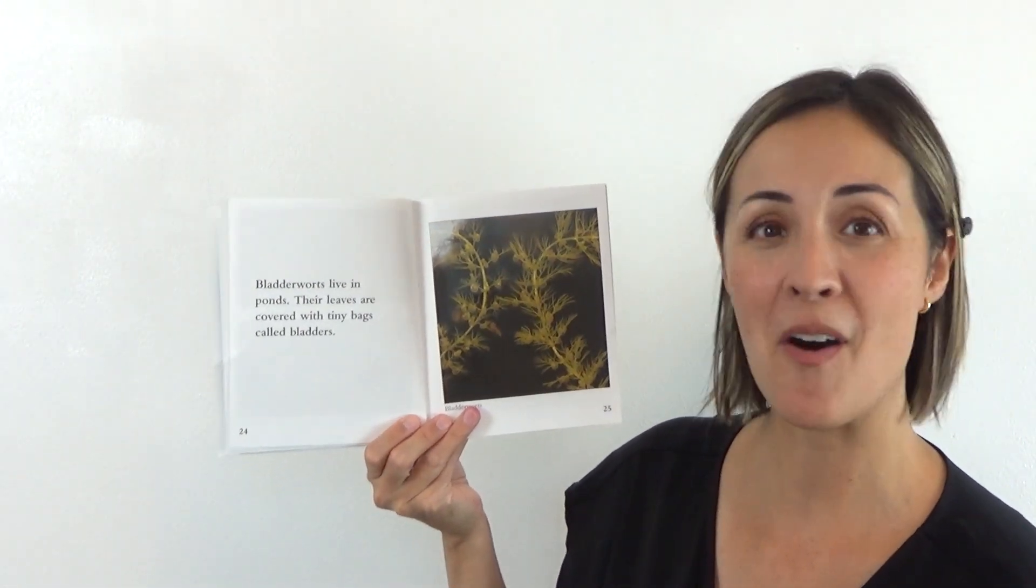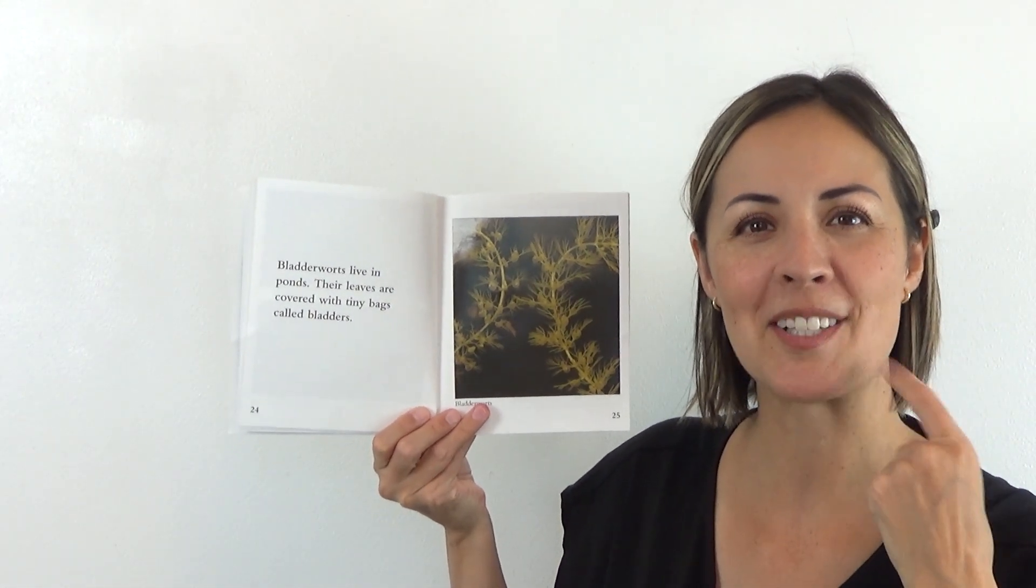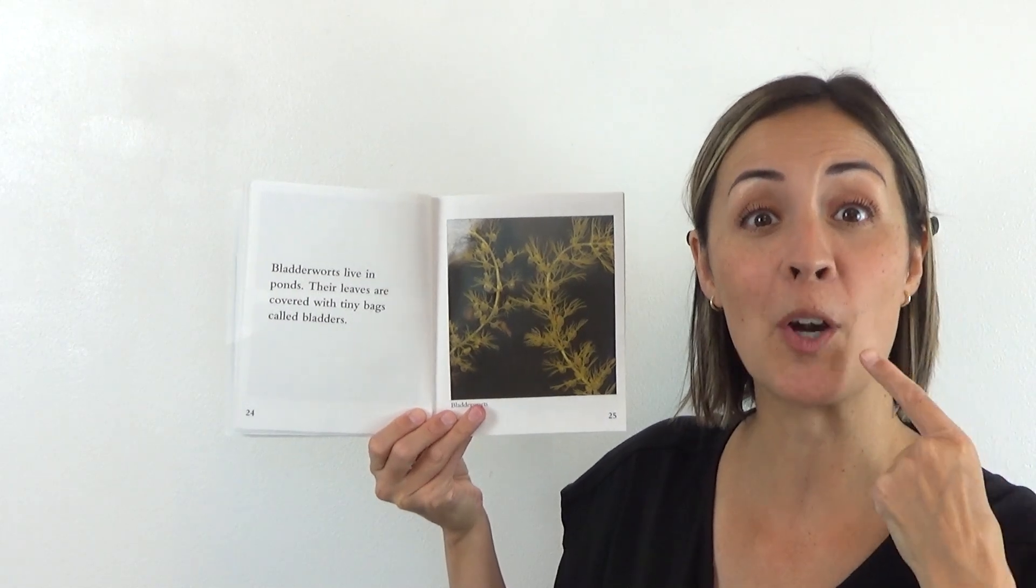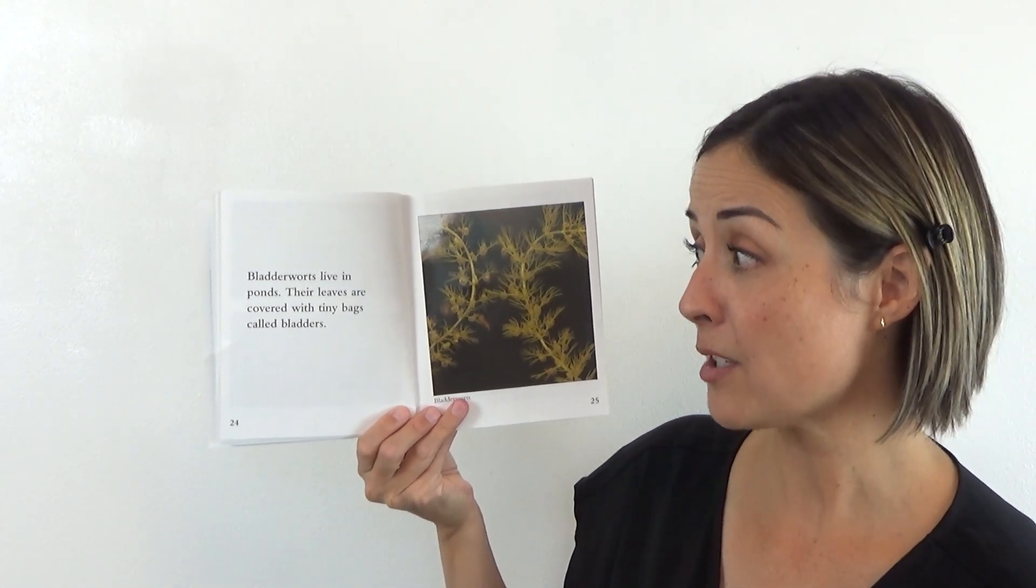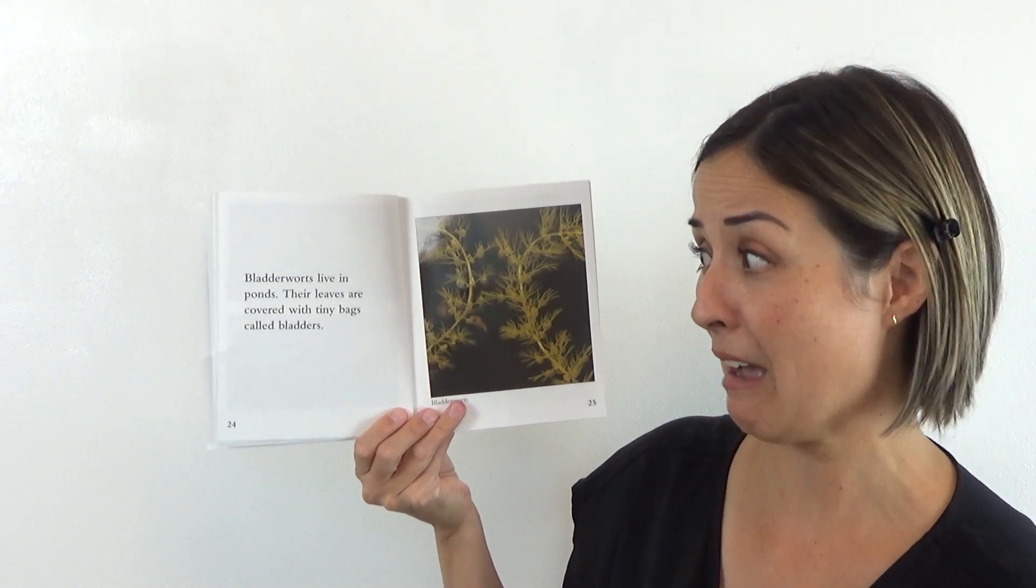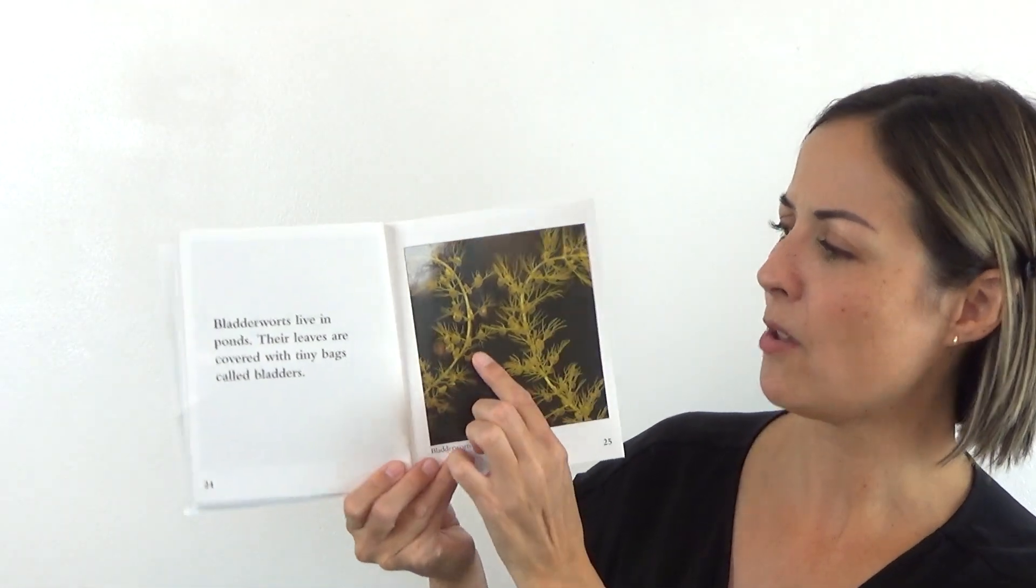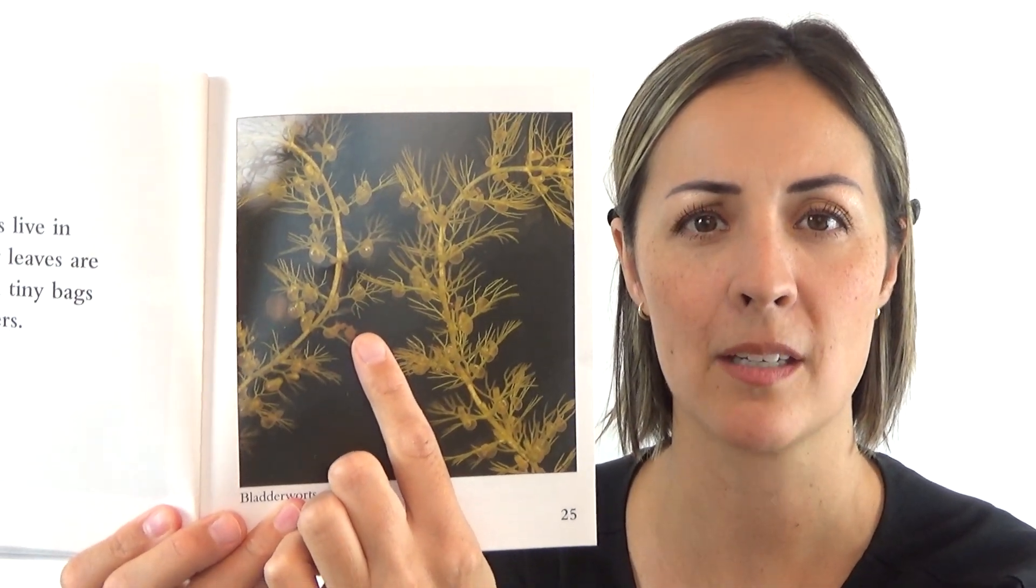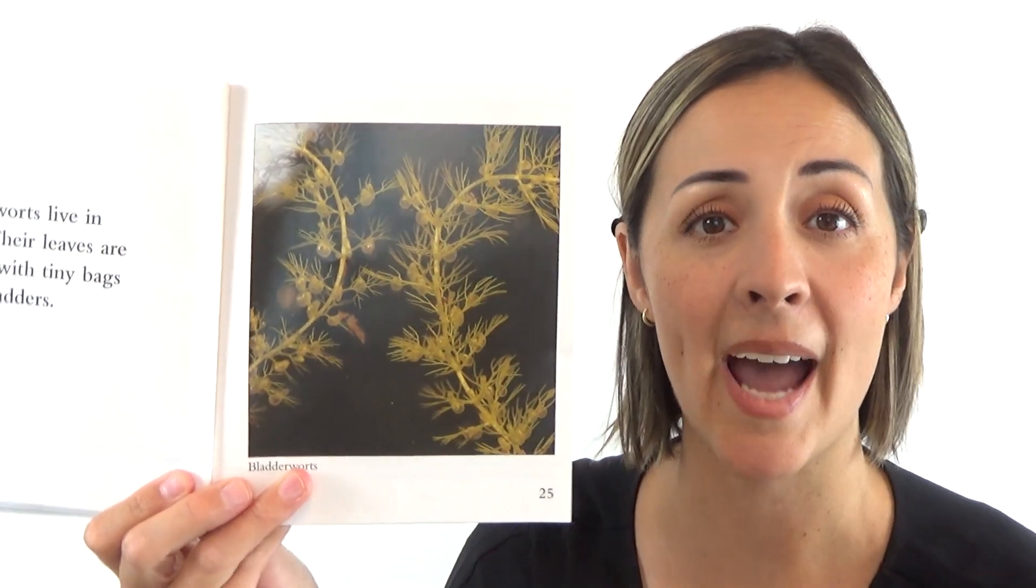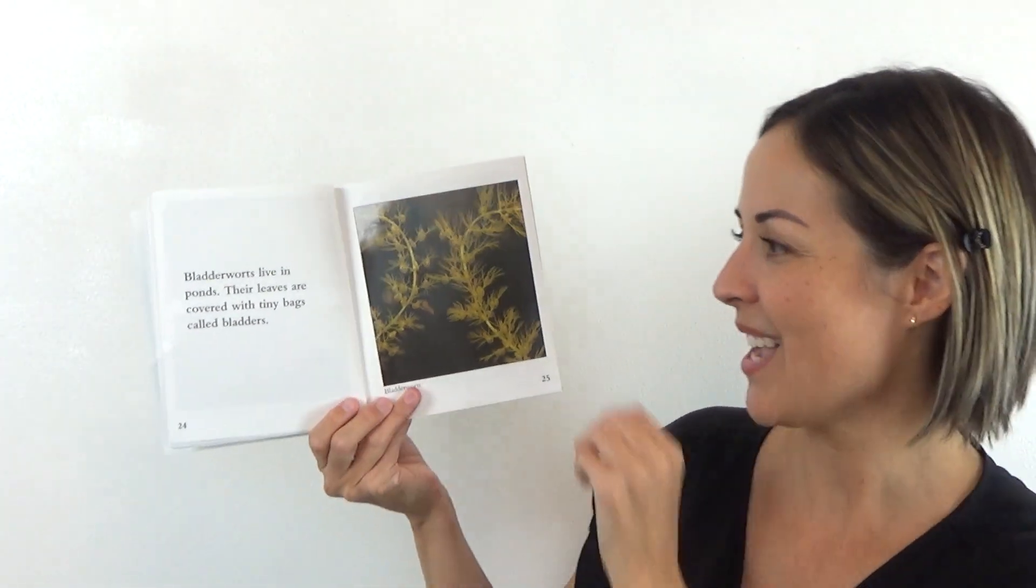Bladderworts live in ponds. Ooh, that's an interesting name. Can you say bladderworts? Ready? Bladderworts. Yeah. Bladderworts live in ponds. Their leaves are covered with tiny bags called bladders. So look if you can see all these tiny little bags on the plant. Those tiny little bags are called bladders. Did you hear it? They're called bladders. Yeah.